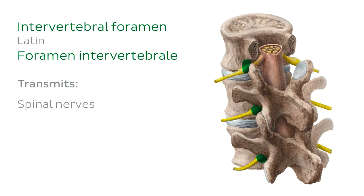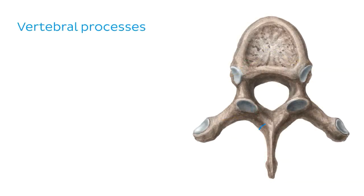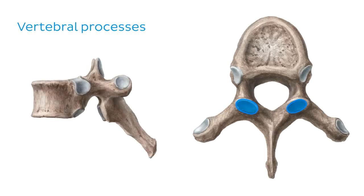Now let's talk about the vertebral processes of the thoracic and lumbar vertebrae. Generally, all vertebrae have a spinous process, two transverse processes, and four articular processes — two superior and two inferior. In this illustration, we're viewing an isolated thoracic vertebra from above, so we can see the two superior articular processes.